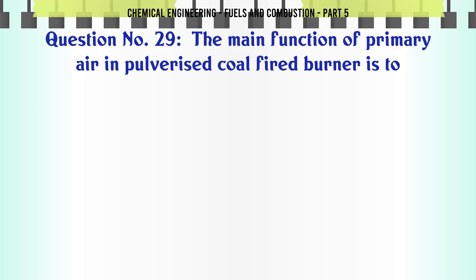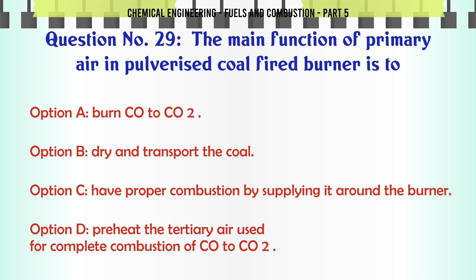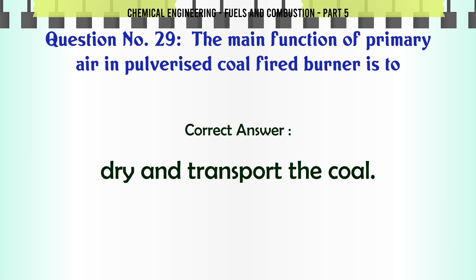The main function of primary air in a pulverized coal-fired burner is to: A. Burn the coal. B. Dry and transport the coal. C. Have proper combustion by supplying it around the burner. D. Preheat the tertiary air used for complete combustion. The correct answer is dry and transport the coal.